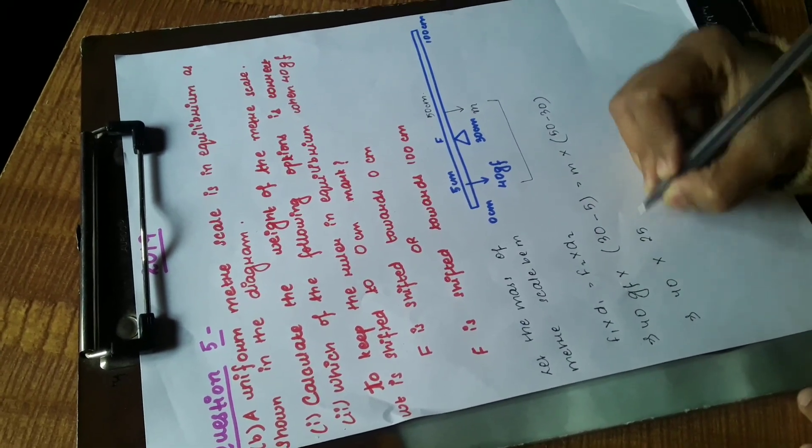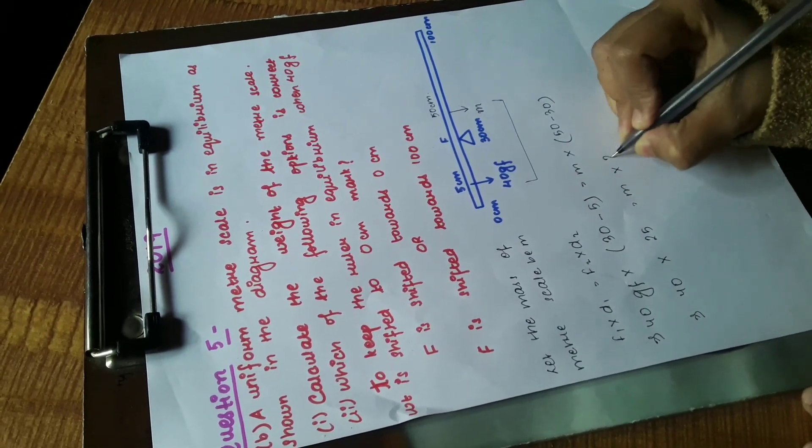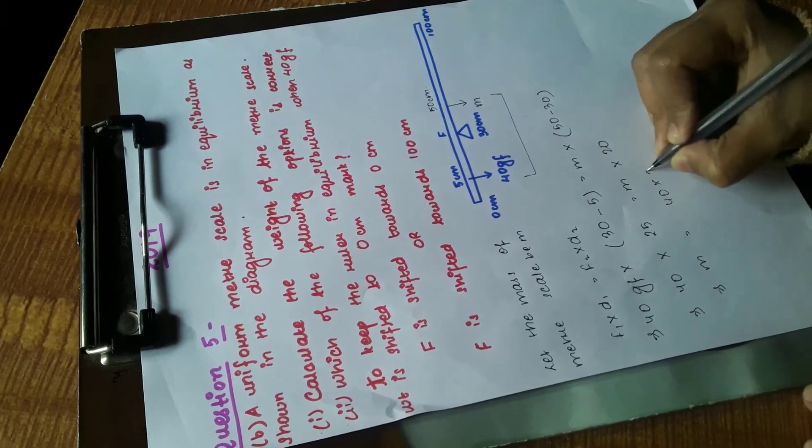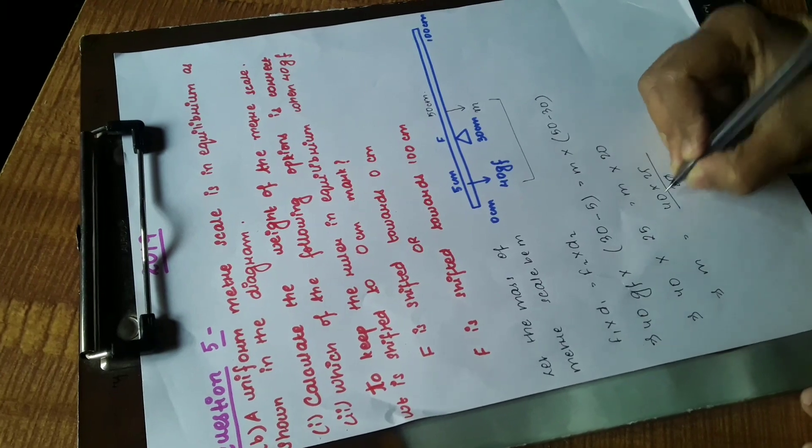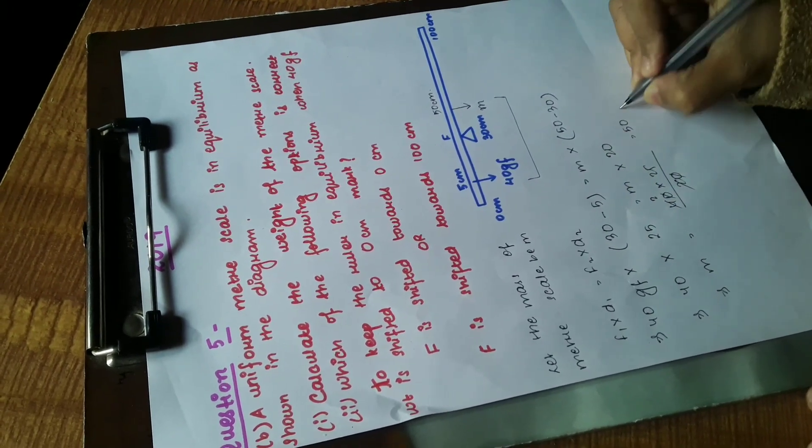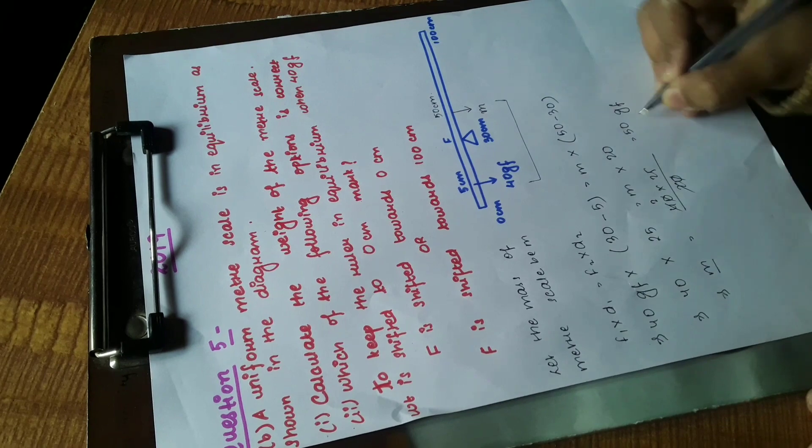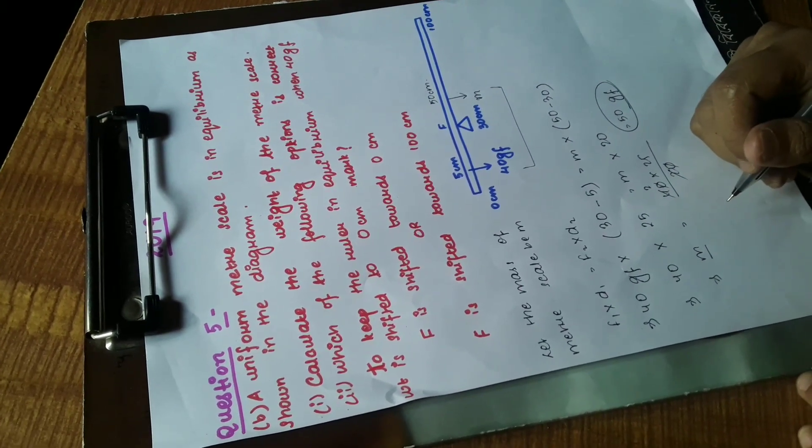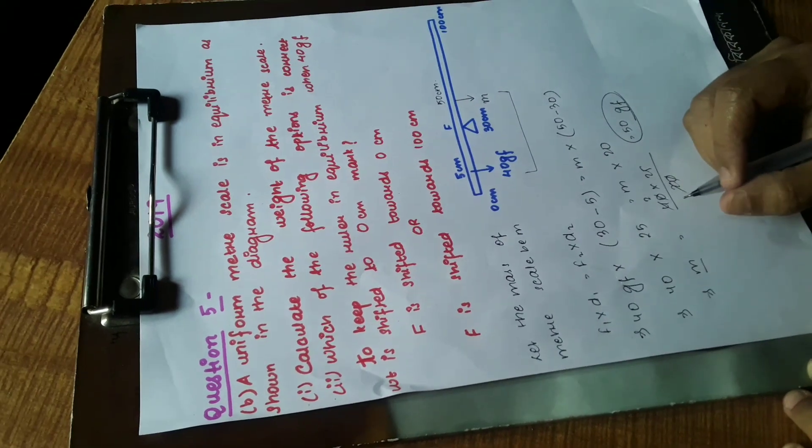Here we have 40 × 25 = M × 20. So M = 40 × 25 ÷ 20. We get 50 GF. So our mass is 50 GF. This is the mass of the meter rule or meter scale. It's a very simple question.